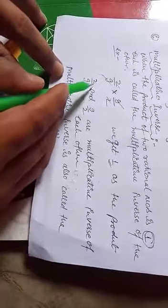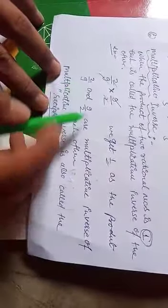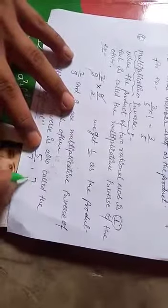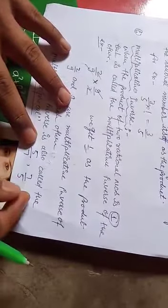If we multiply each other, the result is 1. And if we look at 5 by 7, it will be 7 by 5. So you have to put the denominator to the numerator and numerator to the denominator.